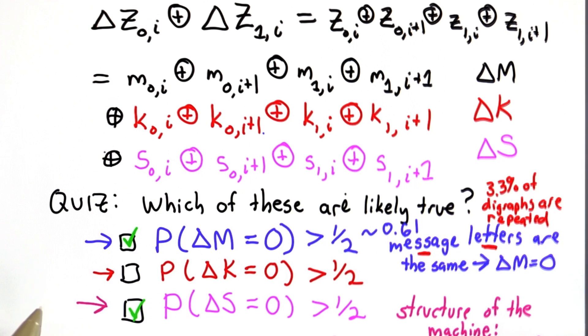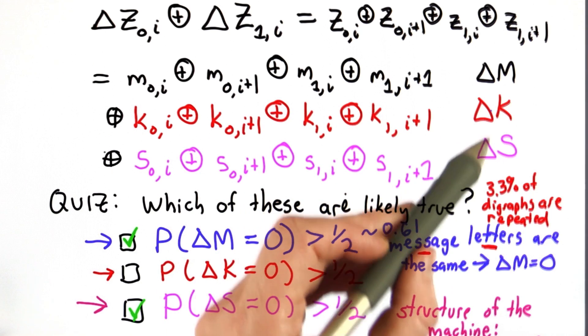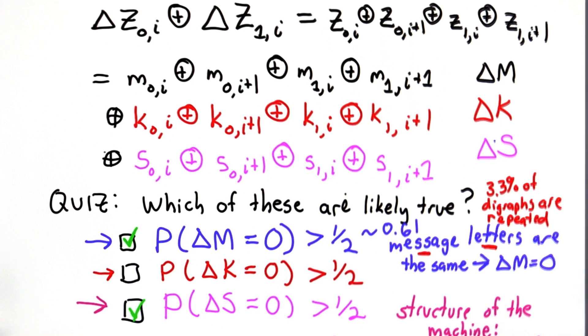So if you recall, the separate channels. We divided the cipher into the message part, the key part, and the part from the wheels.